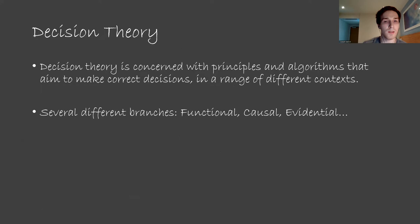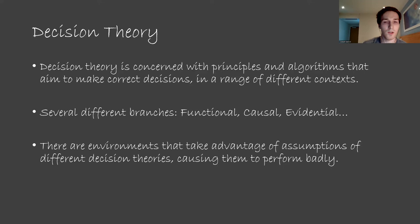As some examples of decision theory that people in alignment are interested in: We have functional decision theory, where agents treat their decisions as the output of some fixed function. We have causal decision theory, where agents take actions that maximize the causal consequences of outcomes they see as desirable. And evidential decision theory, which advises agents to take actions which, conditional on them happening, maximize the chances of desired outcomes. All three of these have different flaws, and environments can be constructed that cause them to perform badly. Jack will talk about this a bit when we discuss Newcomb environments in the infra-Bayesianism video.